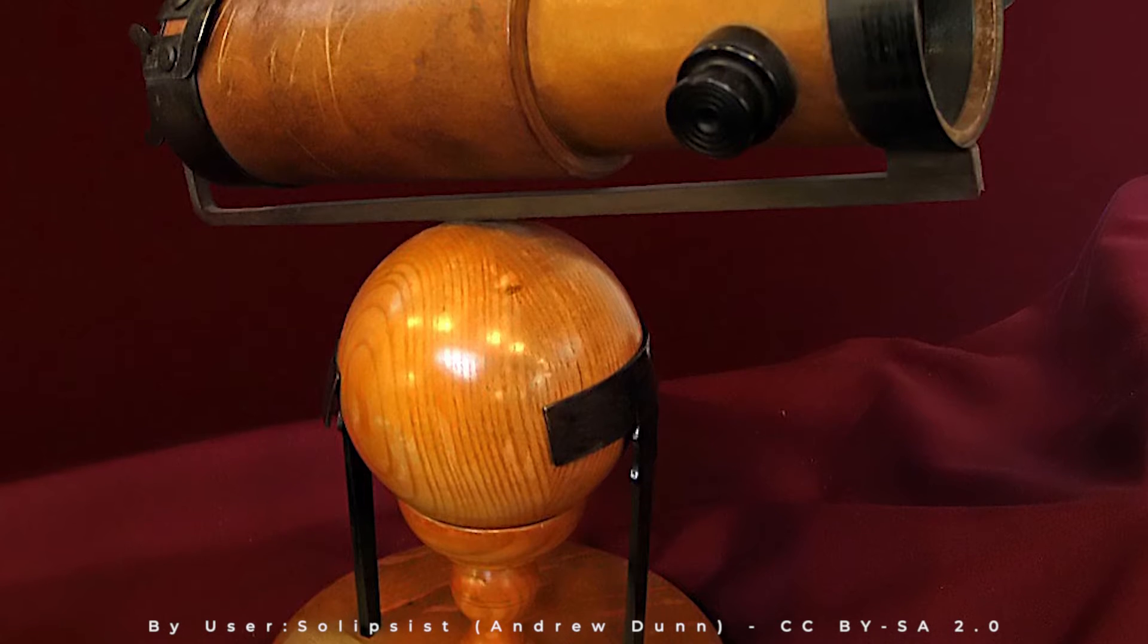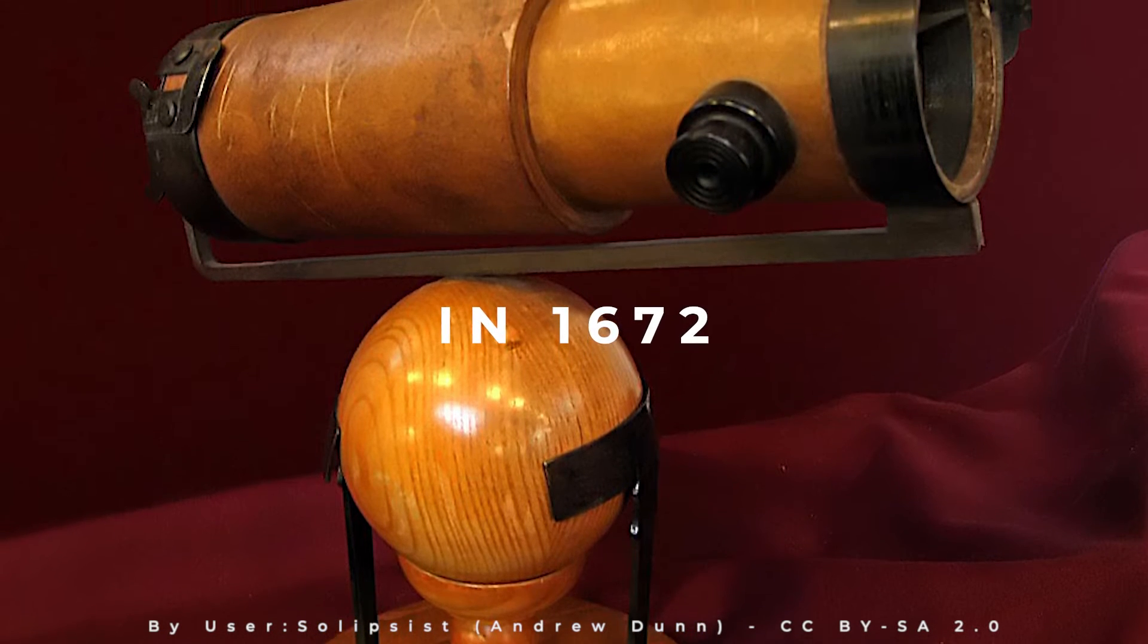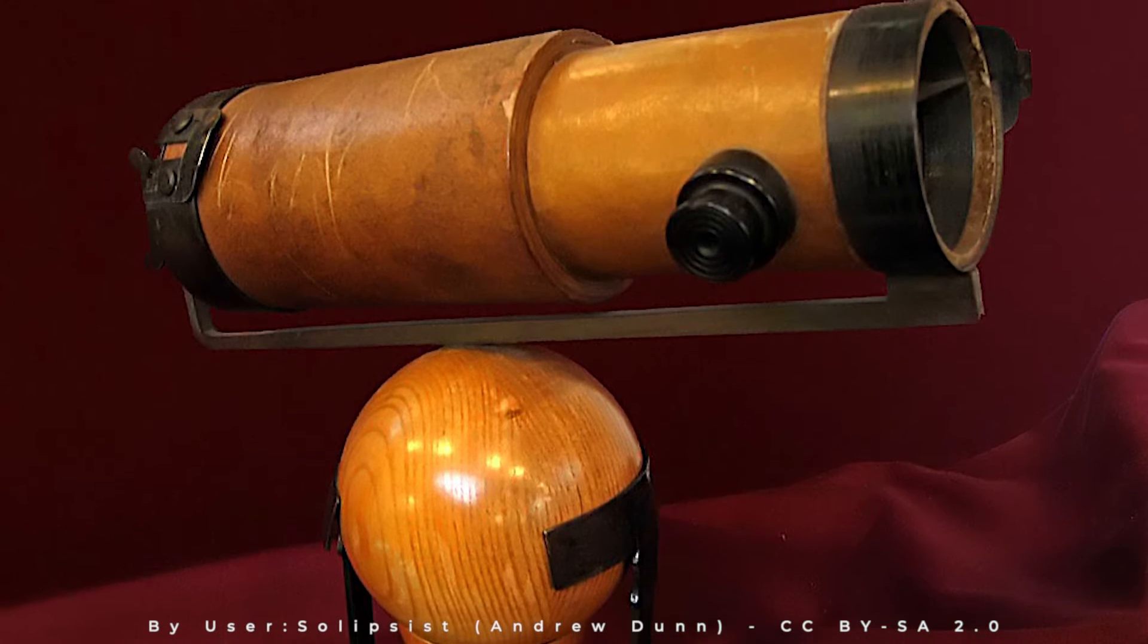Isaac Newton demonstrated a reflecting telescope in 1672 that used a small mirror to reflect light through a 45-degree angle into an eyepiece.